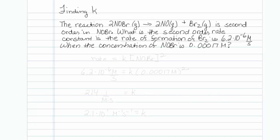The reaction 2NOBr going to 2NO plus Br2 is second order in NOBr. What is the second order rate constant if the rate of formation of Br2 is 6.2 times 10 to the minus 6 molar per second, when the concentration of NOBr is 0.00017 molar?